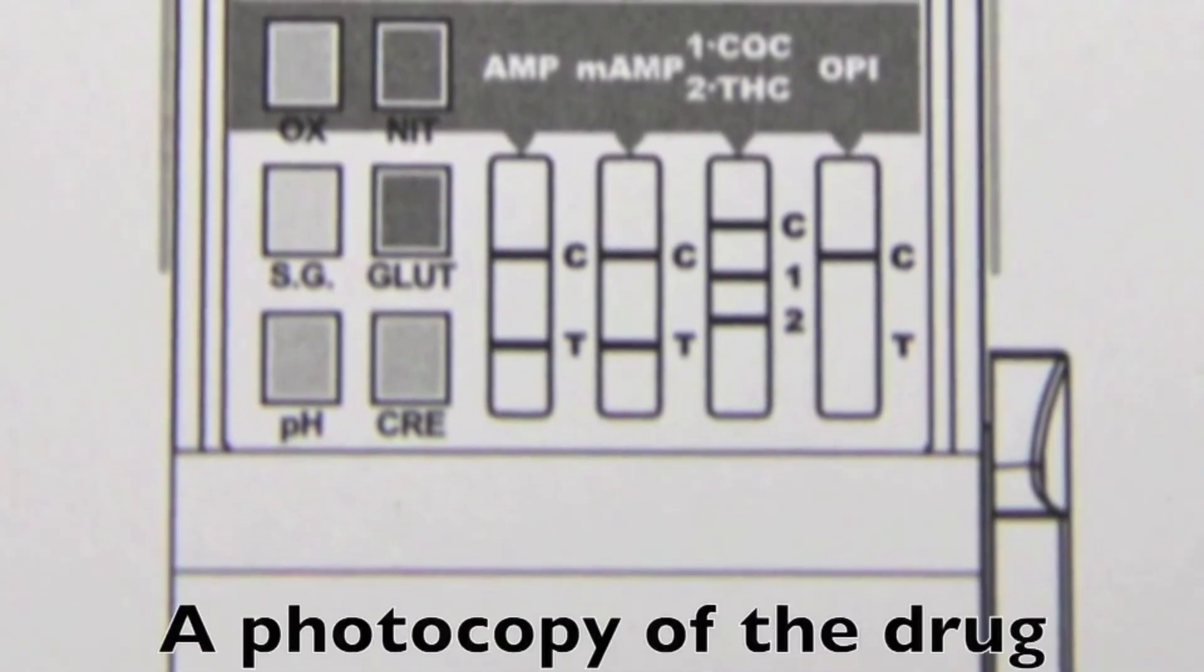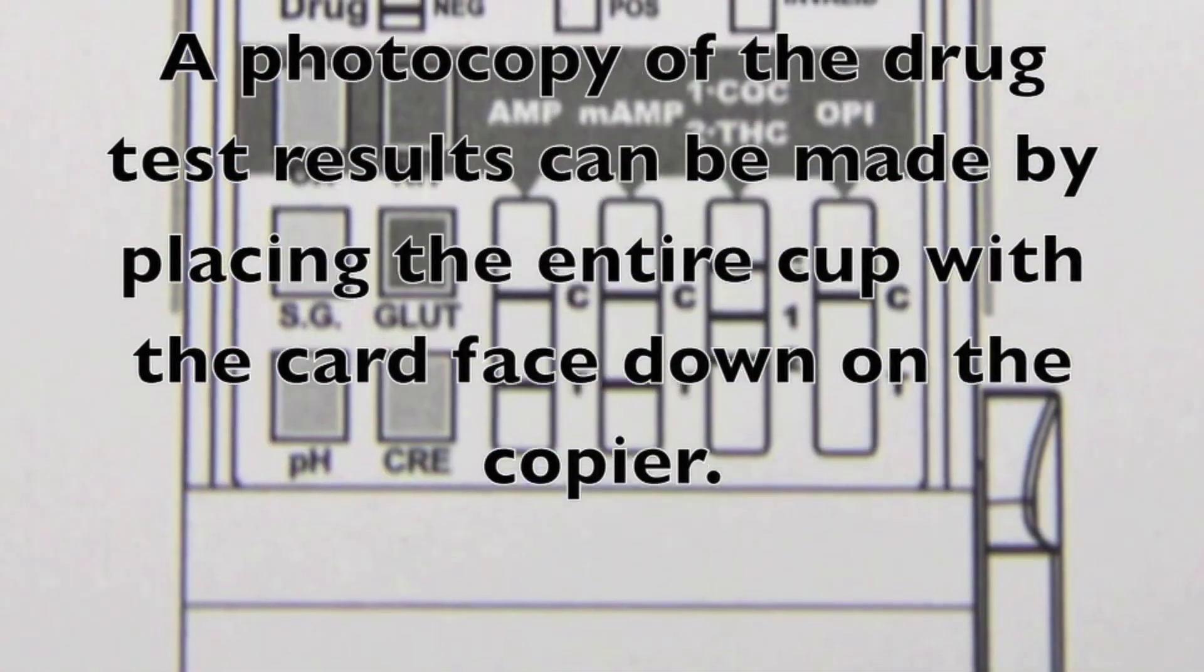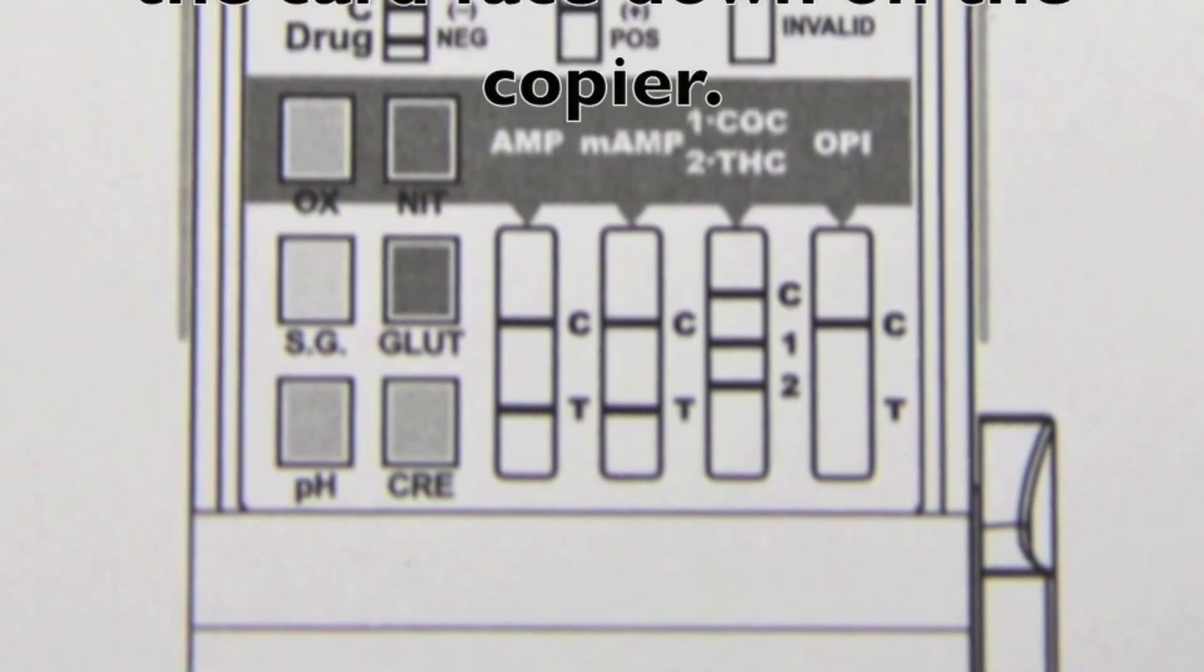A photocopy of the drug test results can be made by placing the entire cup with the card face down on the copier.